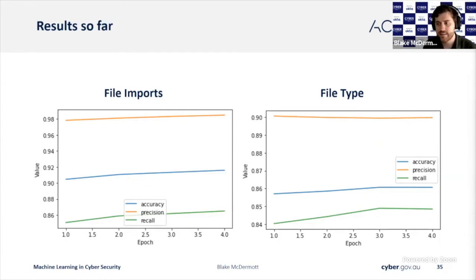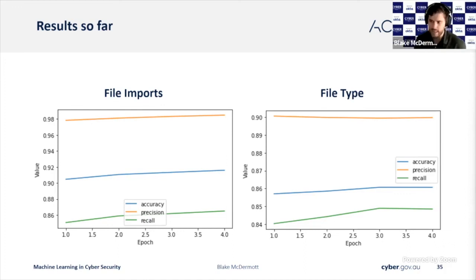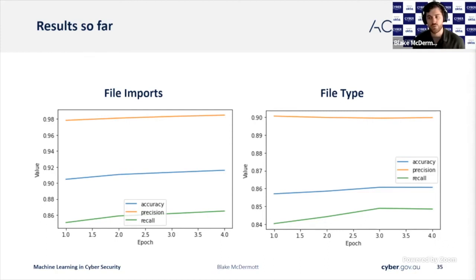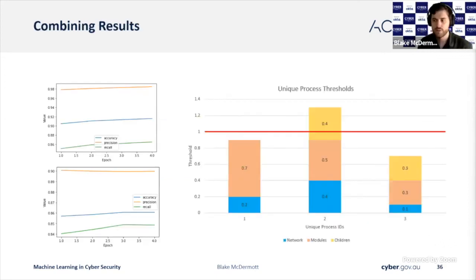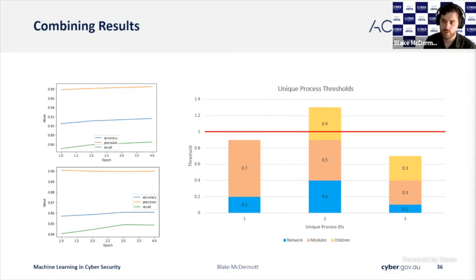With these models, you can see that precision is still quite high — so when we say something is malicious, it often is. But our recall is starting to drop. We can start lowering the threshold for what we call a malicious file and our recall will rise, but as a result our precision will start to lower. This is where the suspiciousness threshold mentioned earlier is very useful — while a model may not directly label something as malicious, two or more models may say that something is suspicious. When we combine the results of all of these models, we can see which executables pass the threshold.